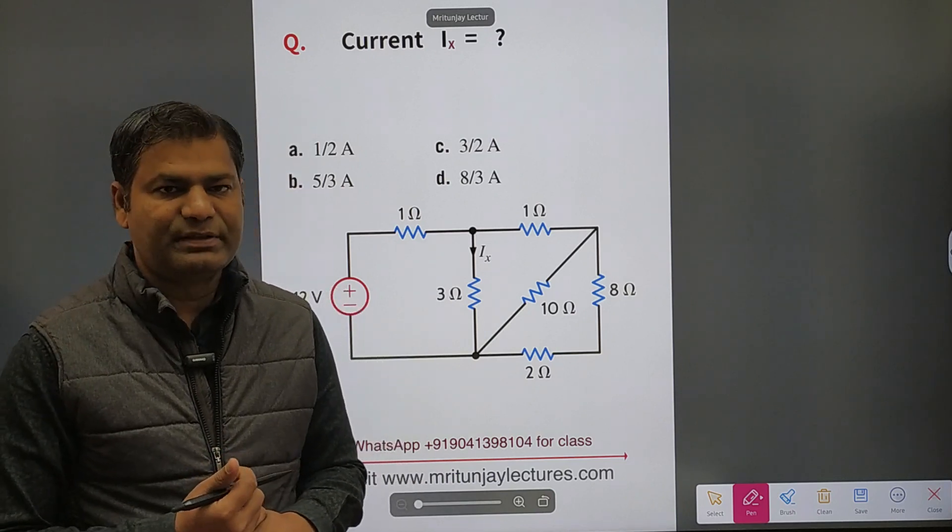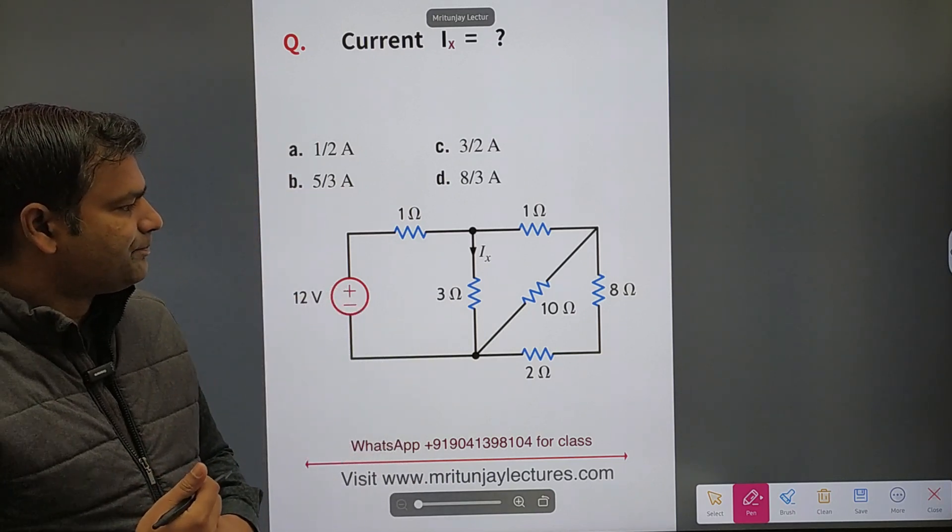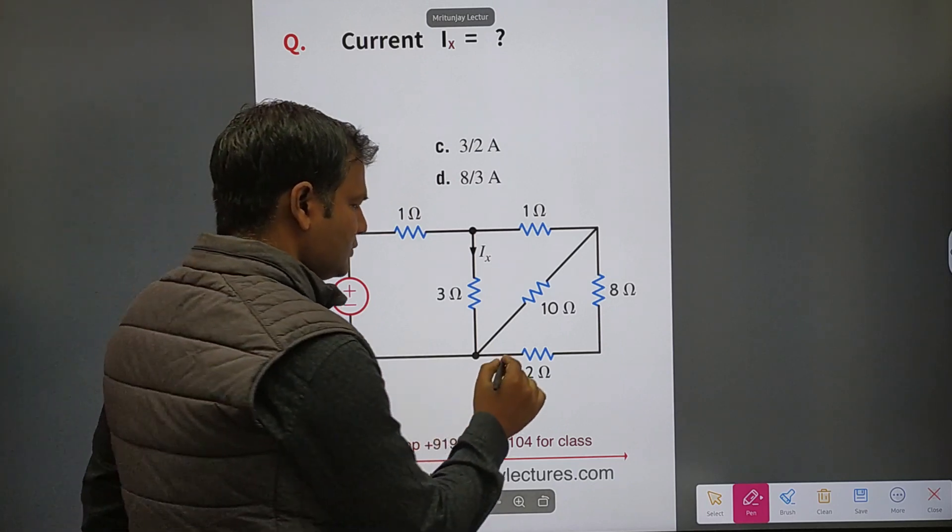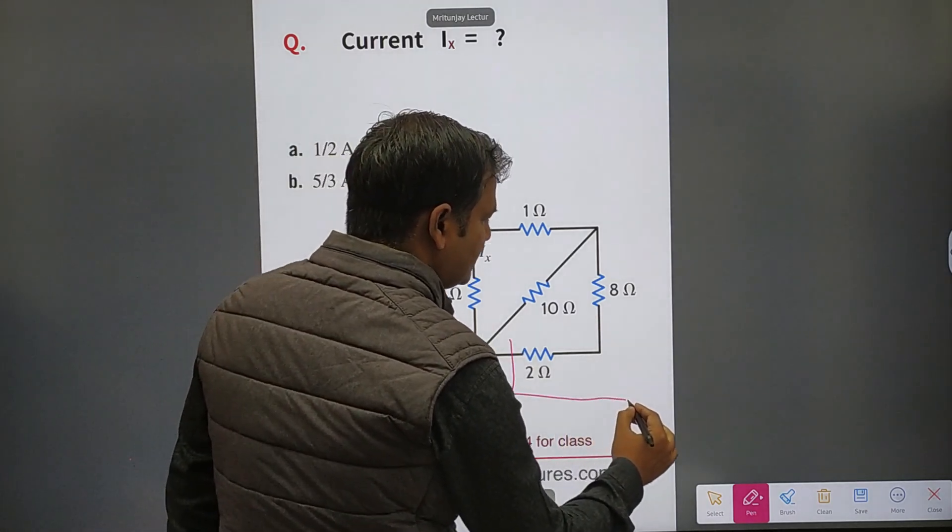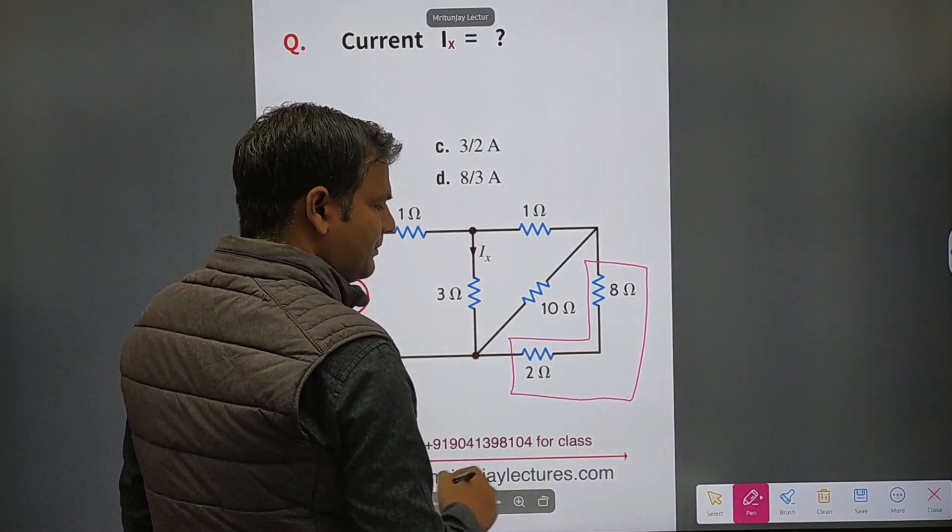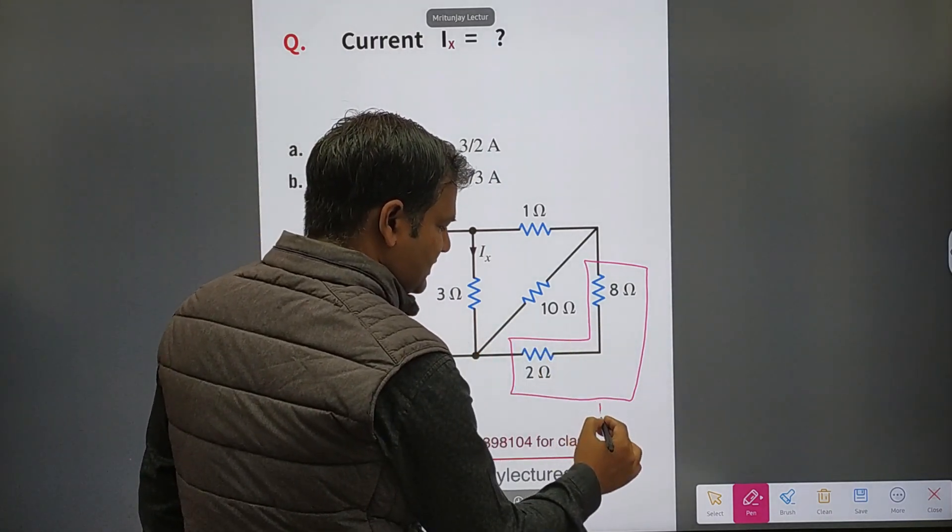Now we need to determine ix. So how can we determine ix? If you see very carefully, these 2 and 8 are in series, so the combination of these two is 10 ohms.